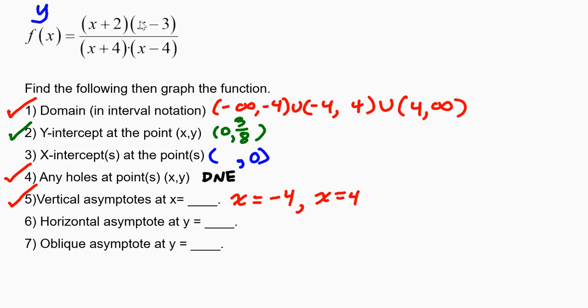Well, the numerator of any fraction, when it is 0, the whole thing becomes 0. Because 0 divided by any number is still 0. So all we need to do is set the numerator equal to 0 and solve for x. So we're going to take x plus 2 times x minus 3, set it equal to 0, and then solve for x.